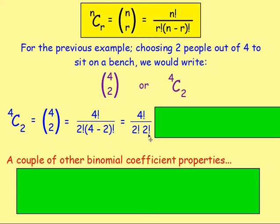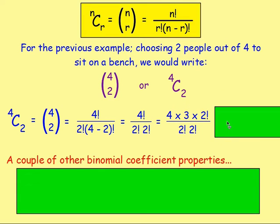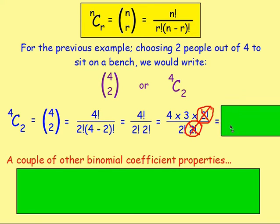Four factorial means four times three times two times one. We can write that in terms of two factorial, so four factorial becomes four times three times two factorial. The two factorial at the top and bottom cancel, leaving four times three on top and two factorial — which is two times one — on the bottom, giving an answer of six.